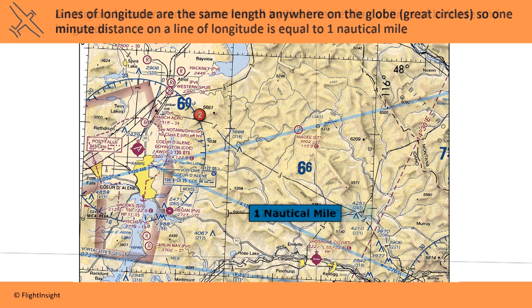Lines of longitude are the same length anywhere on the globe, so 1 minute of distance on a line of longitude is equal to 1 nautical mile. The same can't be said for lines of latitude, since they get smaller and smaller as they approach the poles.